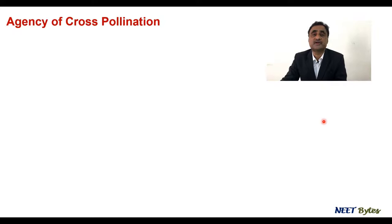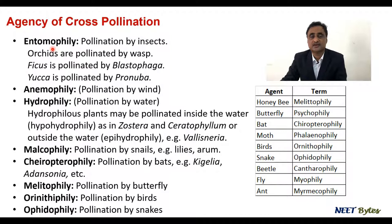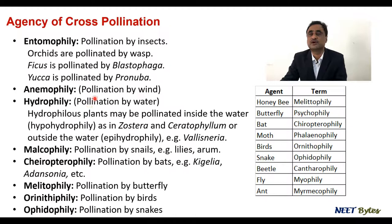Now let's talk about the agencies through which cross-pollination is carried out. Entomophily is pollination by insects. For instance, orchids are pollinated by wasps, Ficus is pollinated by a specific insect called Blastophaga, and Yucca is pollinated by Pronuba. Anemophily is pollination by wind. Hydrophily is pollination through water.